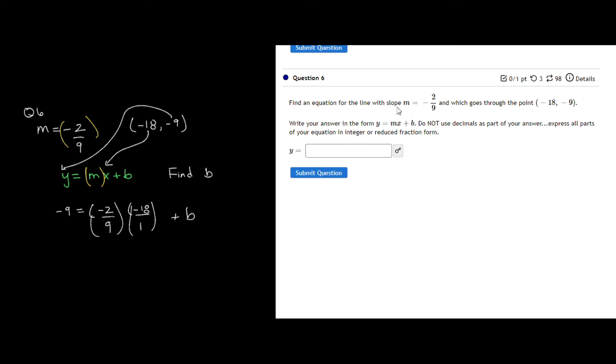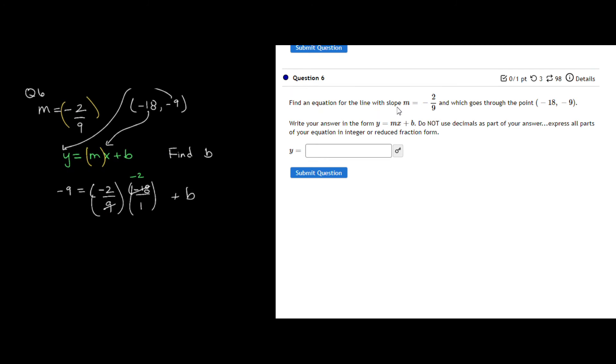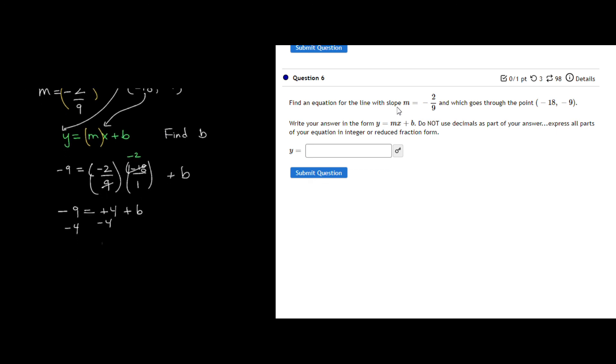So what I have to do here is we reduce these fractions. So I know that 9 divides evenly into negative 18 twice. So that gives me a negative 2. So now my fractions are gone. I have negative 9 is equal to a positive 4 plus b. I subtract 4 from both sides. And I now have a solution that b is equal to negative 13.